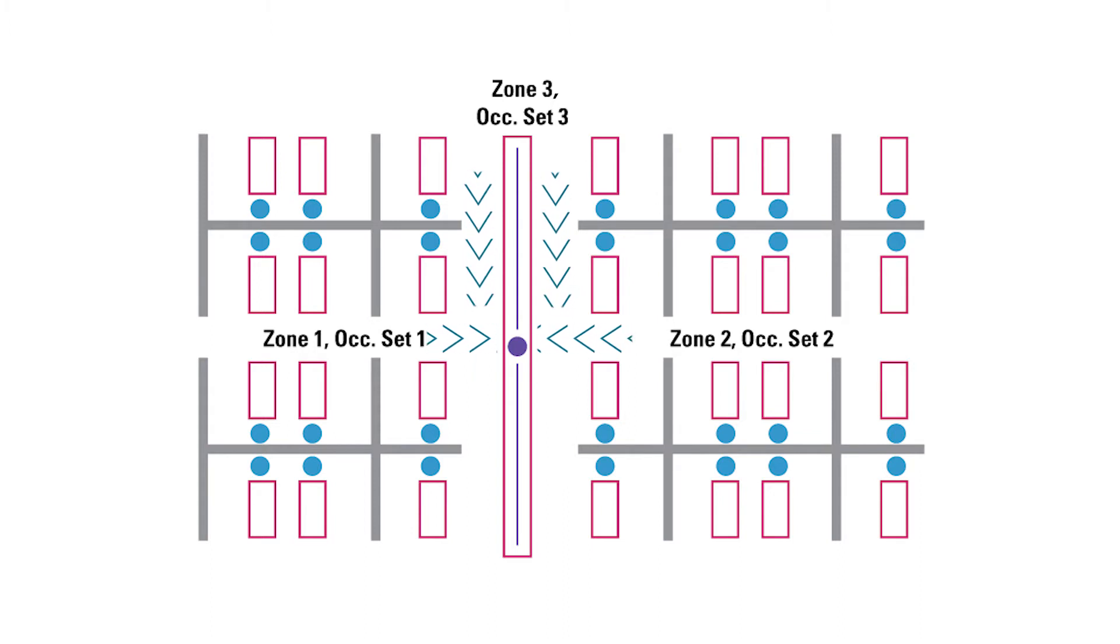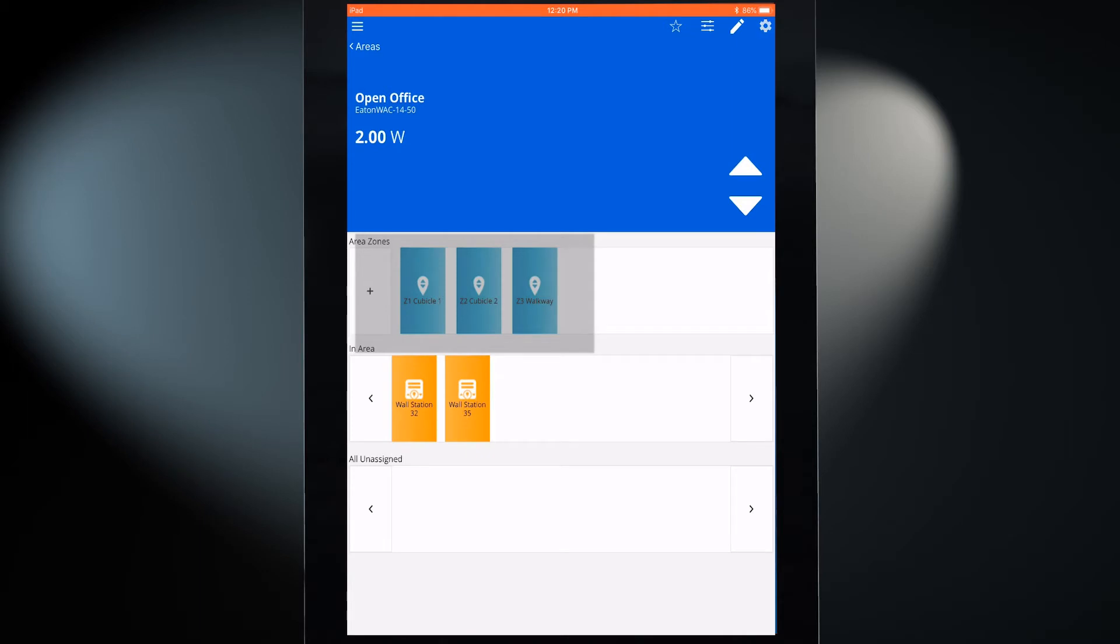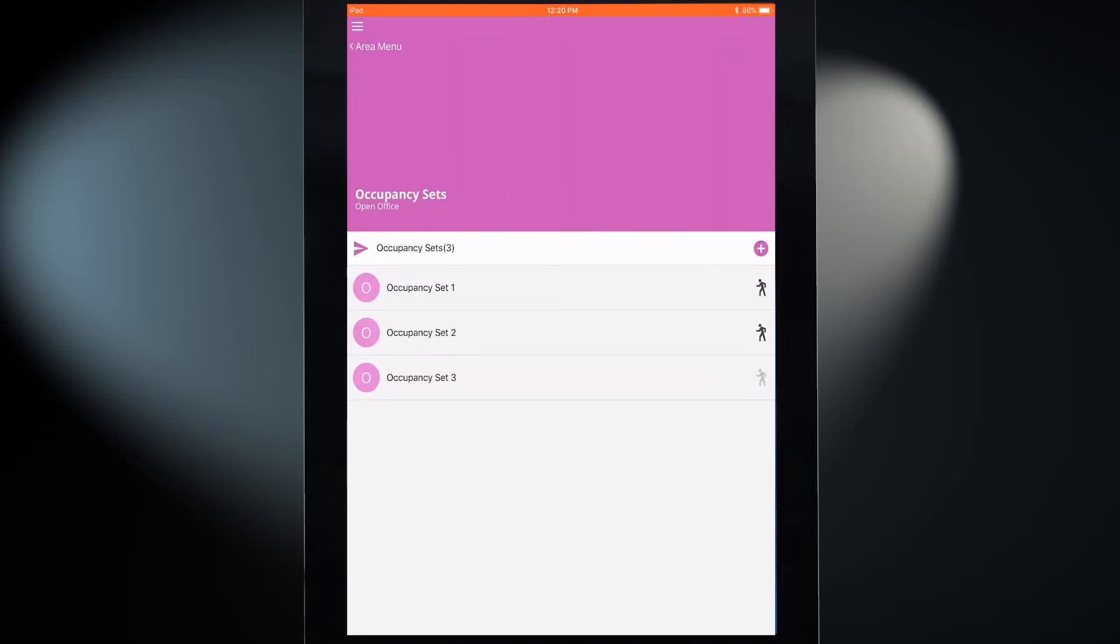In the Wavelink system, this is called associating occupancy sets. In the last video, each zone was assigned to a unique occupancy set.